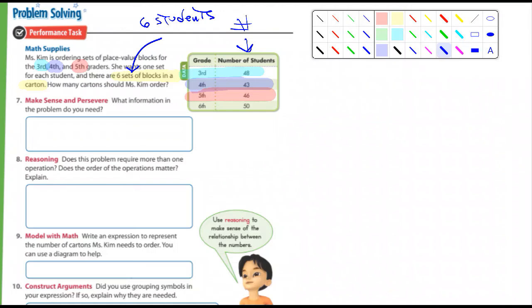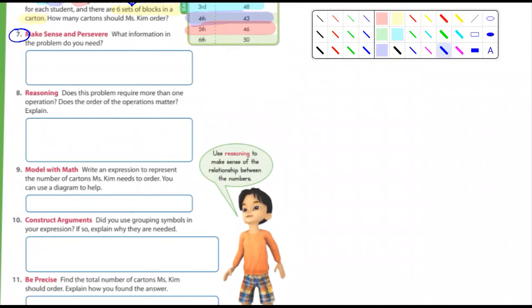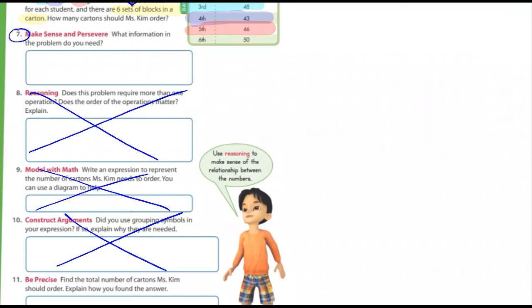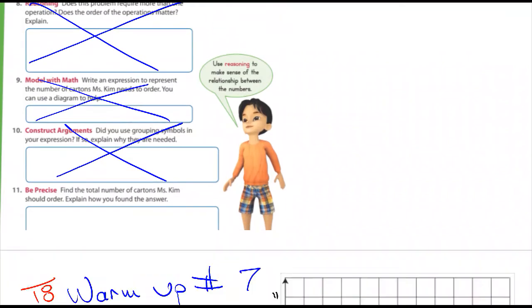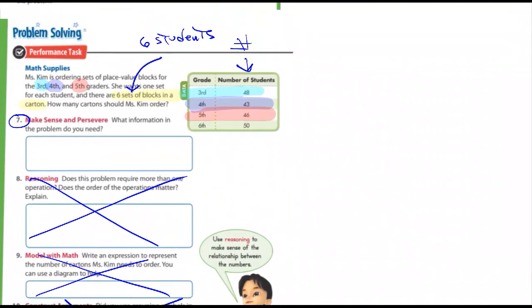So you can answer number seven, what information in the problem do you need, although I really pretty much just gave you that answer. I'm not worried about eight, not worried about nine, yeah I'm not worried about ten either, how convenient is that. And so number eleven says find the total number of cartons Miss Kim should order. Explain how you found the answer. So again, you're giving me the answer and explaining how you got it. And remember that she's ordering for third, fourth, and fifth grade, not just fifth, and don't worry about sixth.